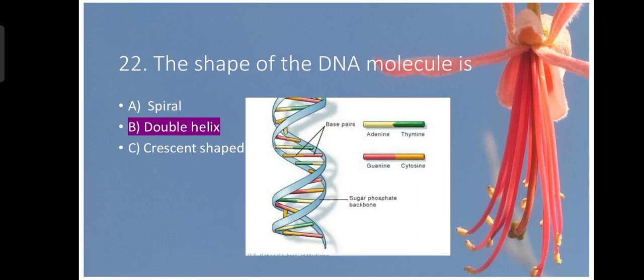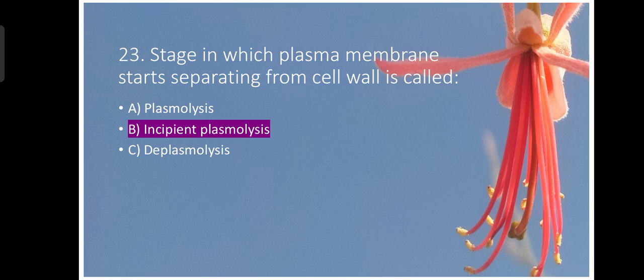Crossing over in meiosis takes place in Pachytene stage. Question number twenty-two. The shape of the DNA molecule is double helix. We know. Stage in which plasma membrane starts separating from cell wall is called incipient plasmolysis. This question is taken from first year book of biology.